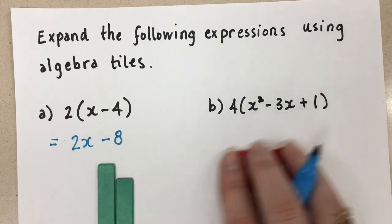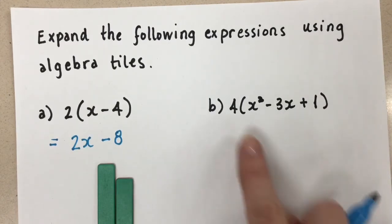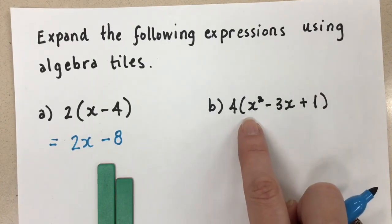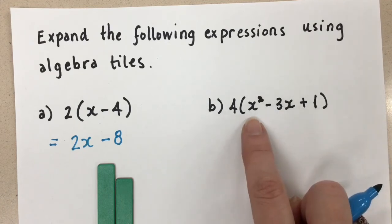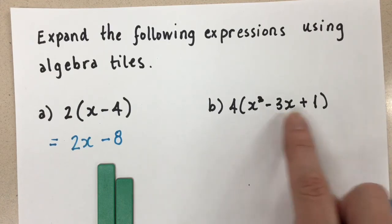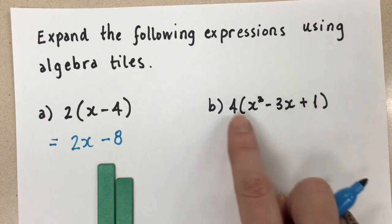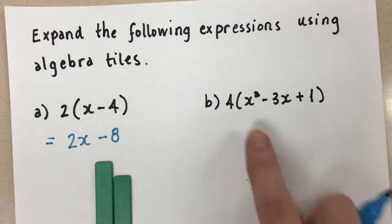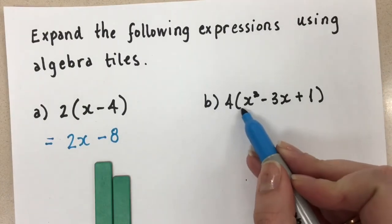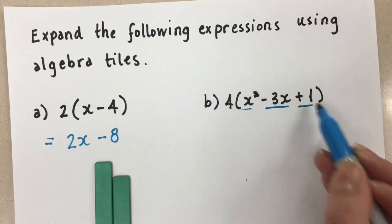Now let's do part b. So part b says 4 times all three of these terms. So inside of the brackets, we have x squared minus 3x plus 1. We need to multiply 4 with all of these. So let's start by getting out the three terms that we have here.